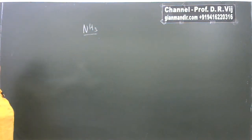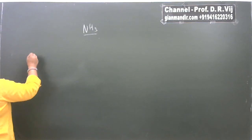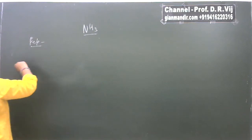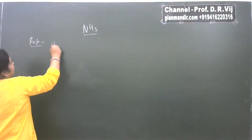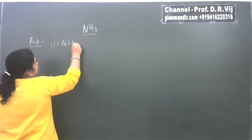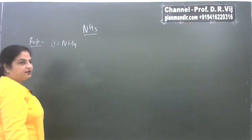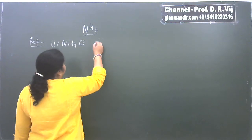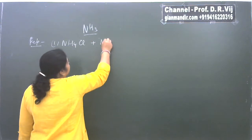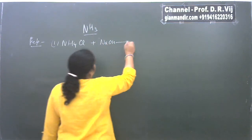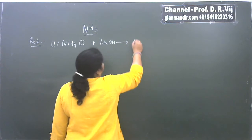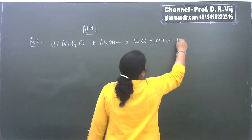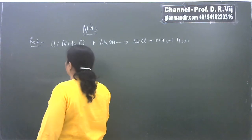Ammonia, as you know, is a very commonly known gas. If we talk about its preparation methods, it can be prepared by various methods. For example, it can be prepared by the reaction of any ammonium salt with a strong base, like ammonium chloride or ammonium nitrate reacted with a strong base like sodium hydroxide or potassium hydroxide. Then the product is sodium chloride, ammonia, and water.